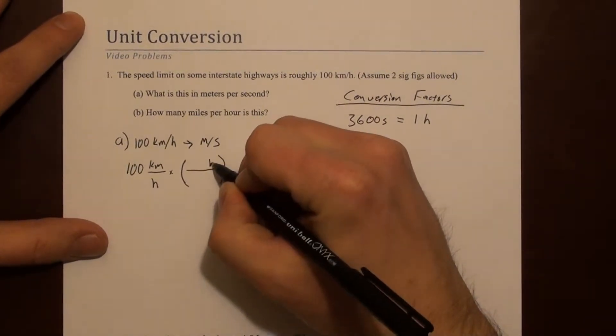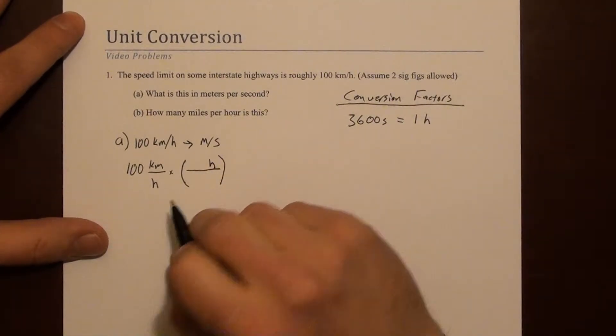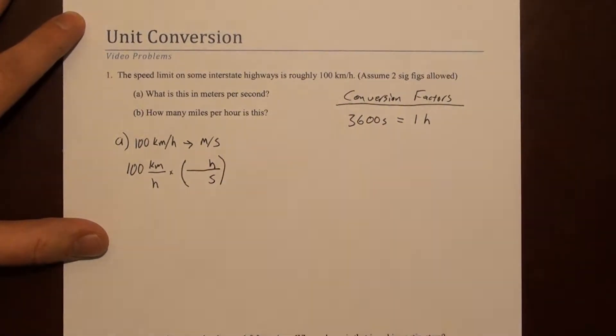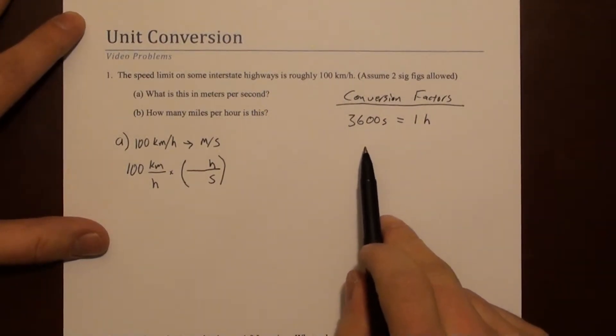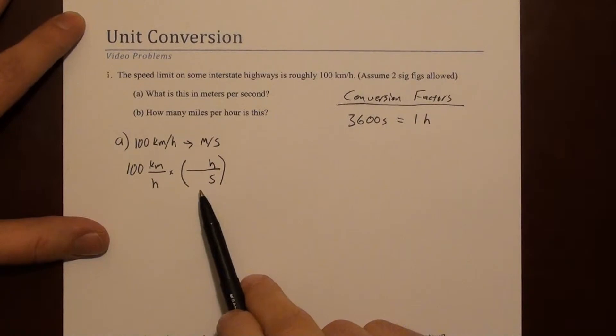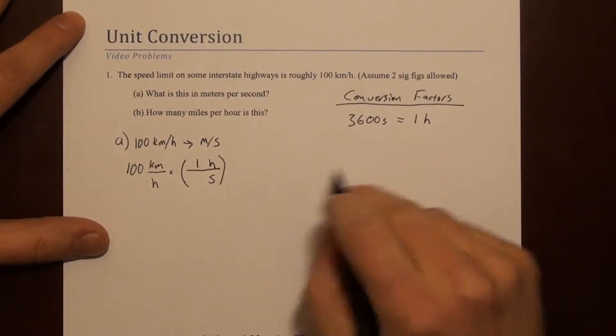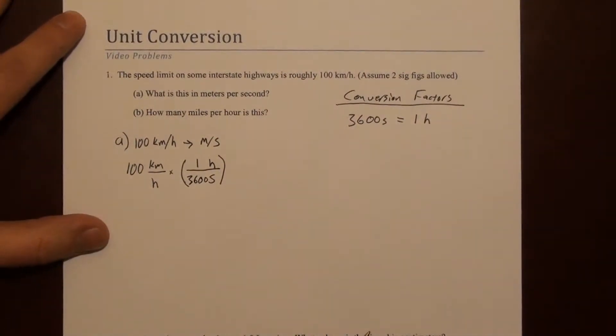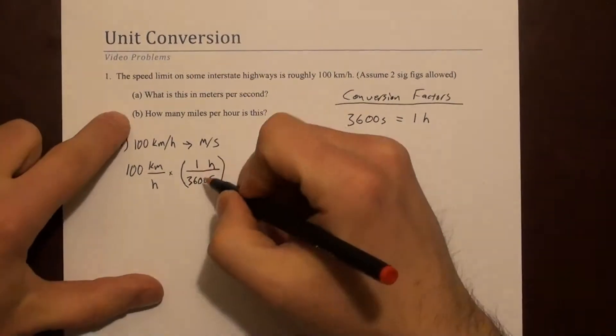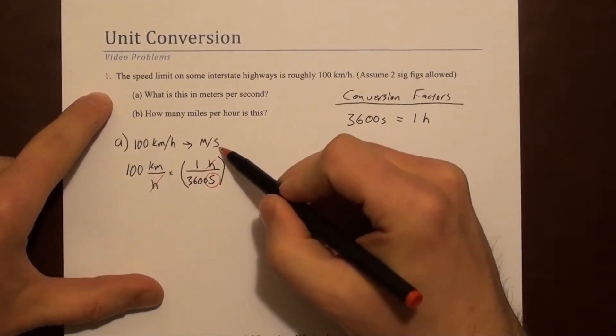We need hours in the numerator to cancel out with hours in the denominator, and we need seconds to show up in the denominator. Now this conversion factor informs how we fill this out. So we have one hour and 3600 seconds. Now we can look. The hour goes away. We're left with seconds, and that's what we want.